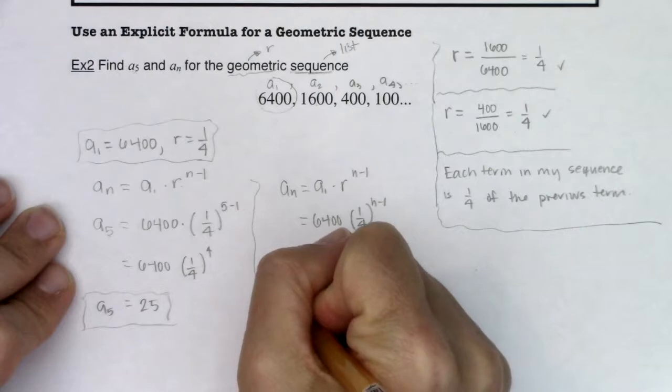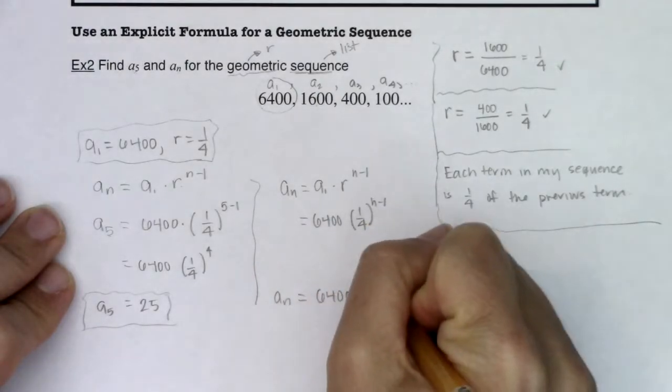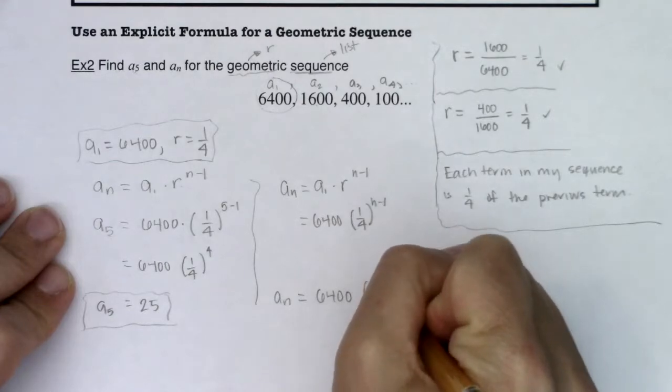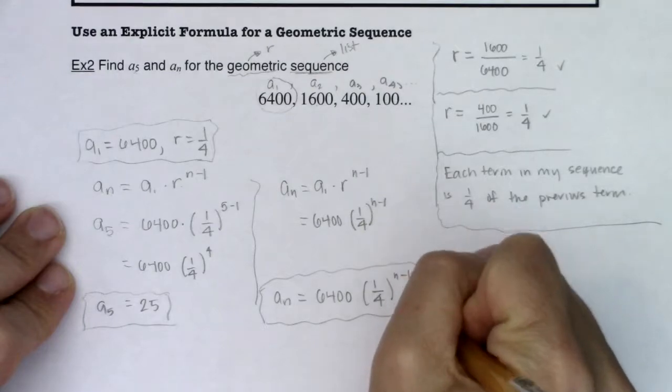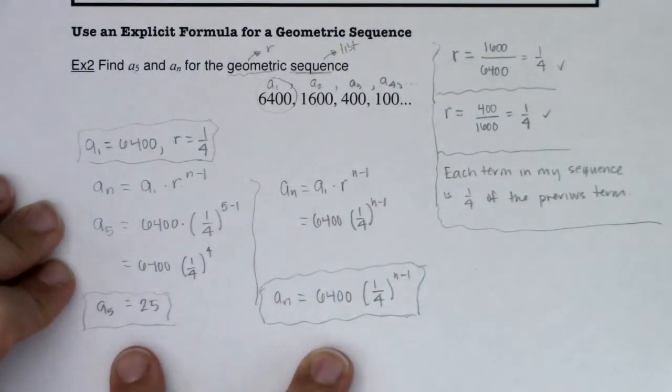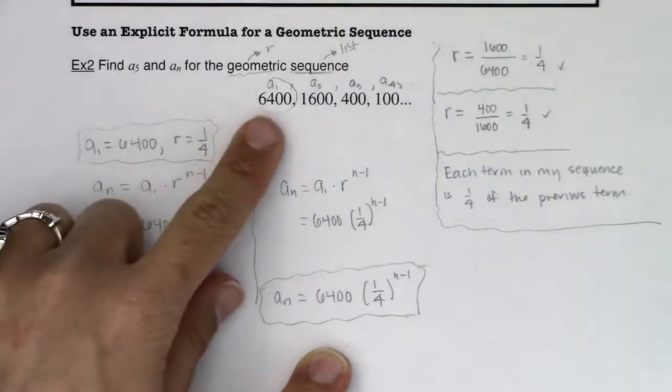So my next answer is a sub n is 6,400 times 1 fourth to the n minus 1. There are my two answers for this question. I have found a sub 5 and I have found a sub n.